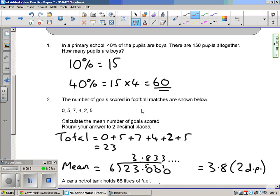Question one: In primary school 40% of the pupils are boys. There are 150 pupils altogether. How many pupils are boys? So 150 pupils, 40% of them are boys. Let's work out 40% of 150. There are many different ways of doing this but I'm going to work out 10% first. To work out 10% of an amount I divide by 10, so 150 divided by 10 is 15. 40% is four times as much as 10%, so I'm going to do 15 multiplied by four. 15 fours are 60.